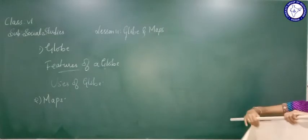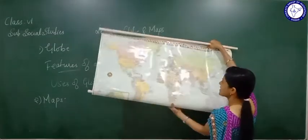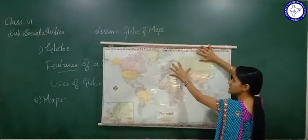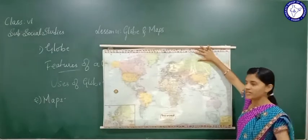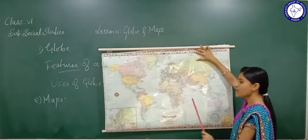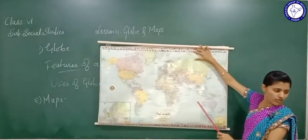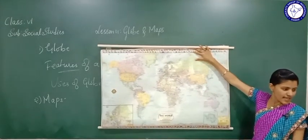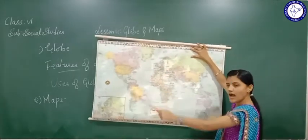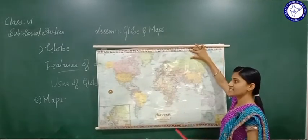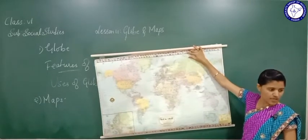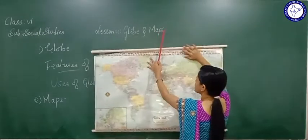We can see here the world map, which is a diagrammatic representation of the whole earth or a part of it on a flat paper. The science and art of map making is known as cartography. This art of making the map is called cartography, and the collection of various types of maps in a book is called an atlas.